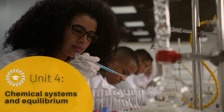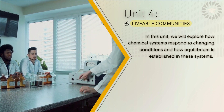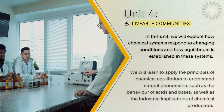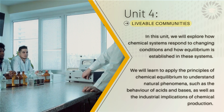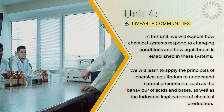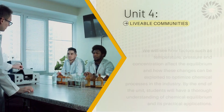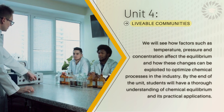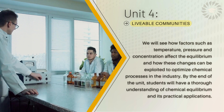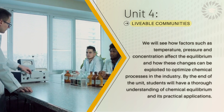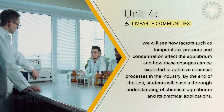Unit 4: Chemical Systems and Equilibrium. In this unit, we will explore how chemical systems respond to changing conditions and how equilibrium is established in these systems. We will learn to apply the principles of chemical equilibrium to understand natural phenomena, such as the behavior of acids and bases, as well as the industrial implications of chemical production. We will see how factors such as temperature, pressure, and concentration affect the equilibrium and how these changes can be exploited to optimize chemical processes in the industry. By the end of the unit, students will have a thorough understanding of chemical equilibrium and its practical applications.